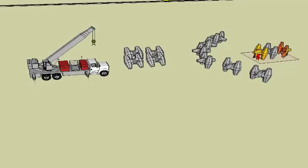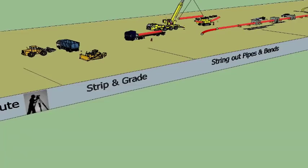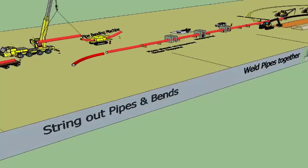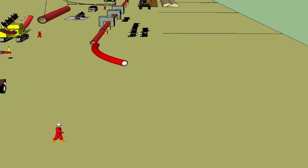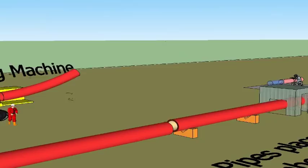Oil and gas pipelines, both onshore and offshore. Onshore pipeline construction sequence: set out the pipeline route, strip and grade the ground, string out the pipes and bends, weld the pipes together, excavate the trench, lower the pipe string into the trench, backfill the trench and reinstate the ground.